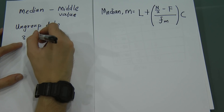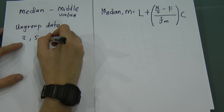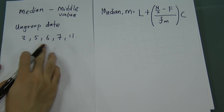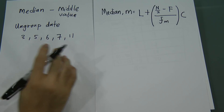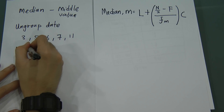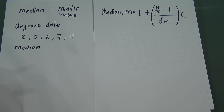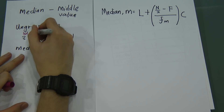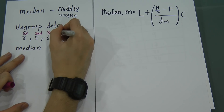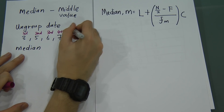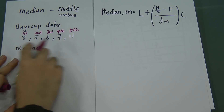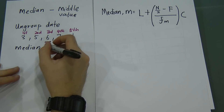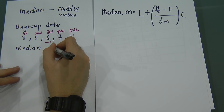Let's say I have: 3, 5, 6, 7, and 11. I have 5 values here. So what is my median value? Very simple — you calculate the middle one. This is the first value, second value, third value, fourth value, and fifth value. So obviously the median value will be 6. Therefore, my median here is 6.